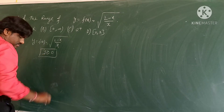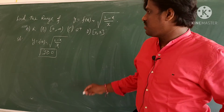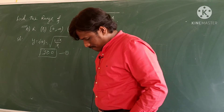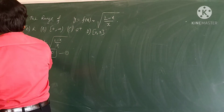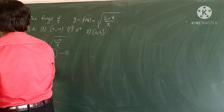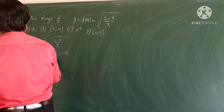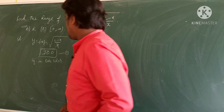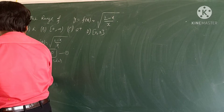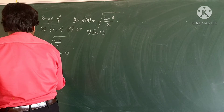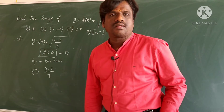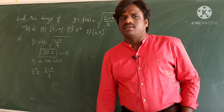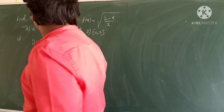Since y ≥ 0, we square both sides. Squaring on both sides gives y² = (2-x)/x. Now we will make x the subject.